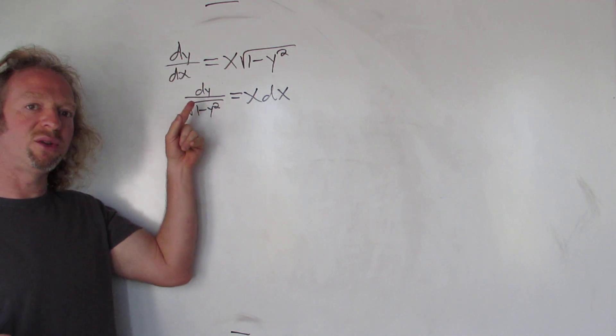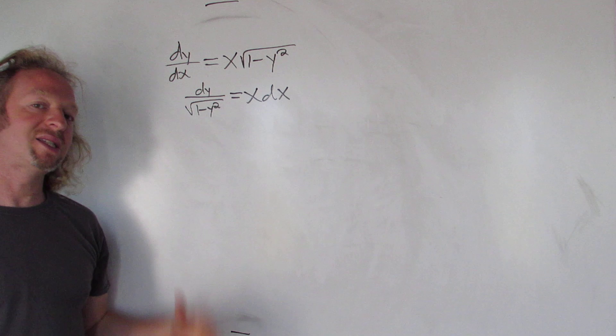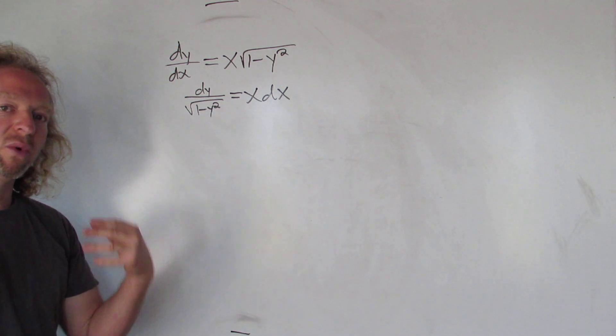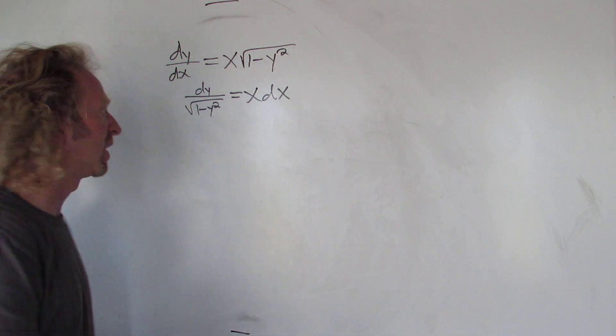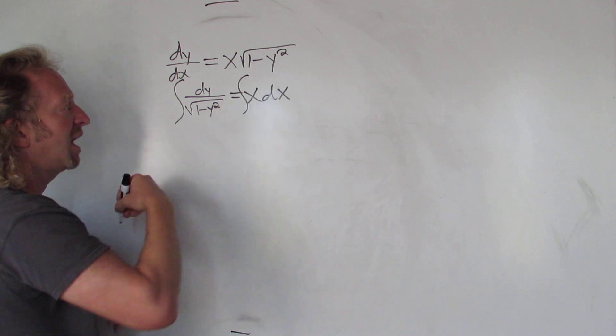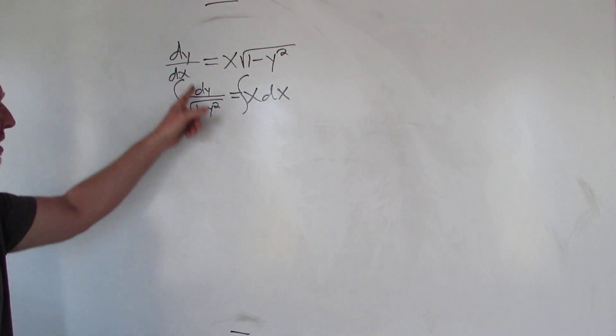And so now we've accomplished our goal. We have only y's and dy on one side and only x's and dx's on the other side. When you have this, then you can integrate both sides and then you can finish the problem. This is an integral that might be familiar.